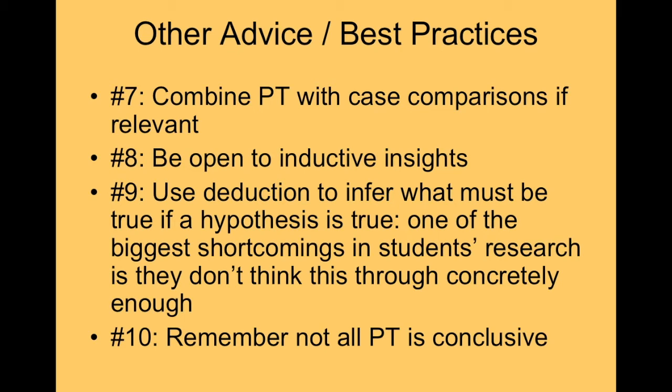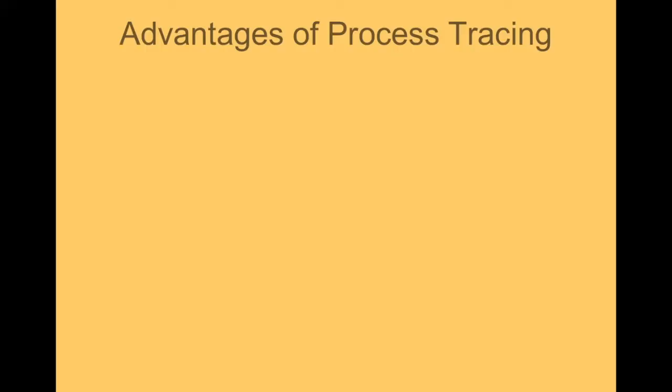Finally, remember that process tracing is not necessarily conclusive. If we don't have strong evidence that powerfully discriminates between alternative explanations, we may not be able to say something convincing about which explanation accounts for the outcome. It's analogous to a district attorney who may not have strong enough evidence to definitively point to one suspect. Maybe you've excluded the conventional wisdom as an explanation, but you still can't discriminate among the remaining viable alternatives — well, that's still a contribution. But we don't want to overstate our certitude. We want to be true to the weight of the evidence.